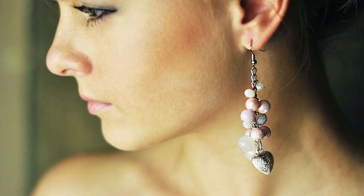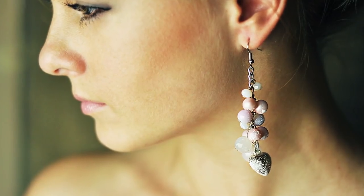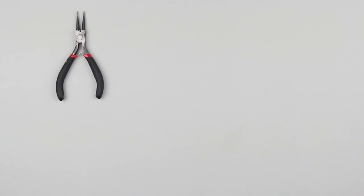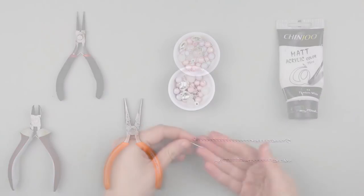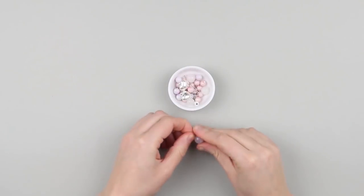In our today's tutorial, we will show you how to make exclusive earrings from beads. We'll need round nose pliers, cutting pliers, flat pliers, beads, metal hearts, white acrylic paint, and chain. Take a decorative pin and thread a bead.